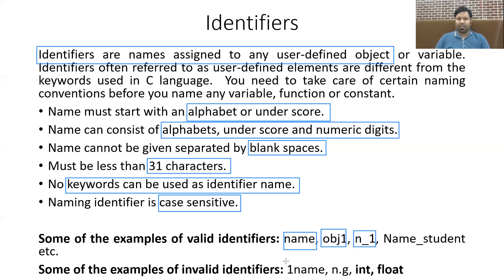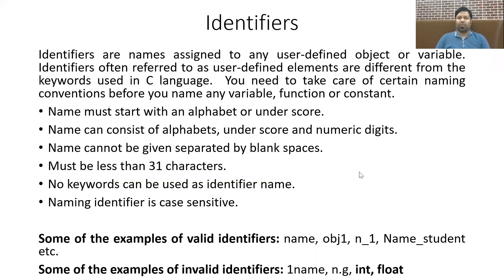Now let's look at some illegal identifier names the compiler will reject. '1name' — starts with a digit, which is not allowed. 'N.G' — has a dot symbol, which is not allowed; only underscore is permitted. 'int' — looks like a valid name but is a keyword with a predefined meaning in C, and you cannot use a keyword as an identifier name. These are the rules to follow while naming an identifier.